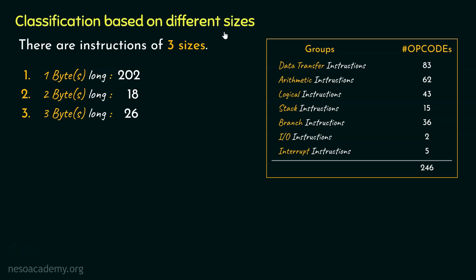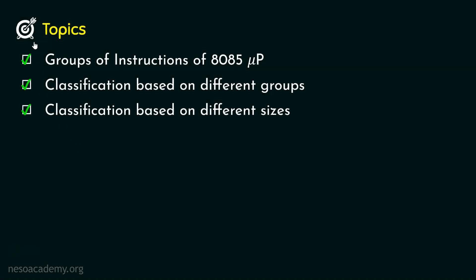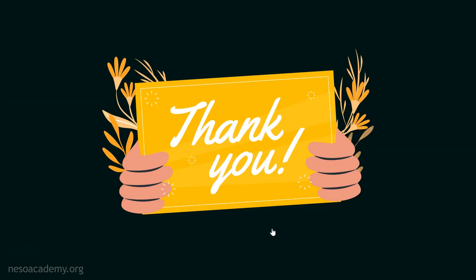From the next session onwards we will begin the data transfer group of instructions, learning the instructions based on their types and thereafter the different op codes within each type. In this session we covered: the different groups of instructions in the 8085, classification based on groups, and classification based on different sizes. I hope to see you in the next one — thank you all for watching.